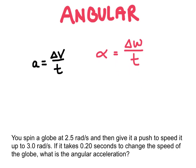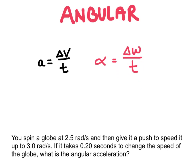Angular acceleration looks very similar to linear acceleration. Instead of 'a', we use the symbol alpha, a Greek letter. And instead of linear velocity, we use angular velocity with the symbol omega. So angular acceleration alpha equals the change in omega over time. For omega, we use the SI units of radians per second, because we have something traveling in a circle, and radians measure the angle at which it's changing.